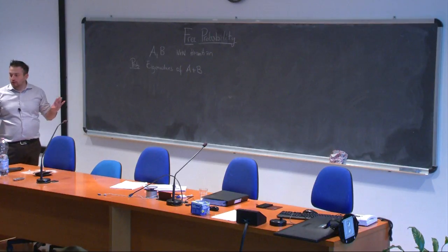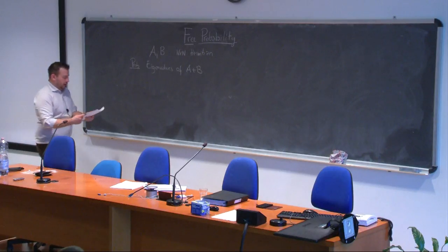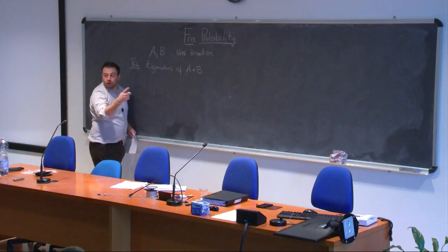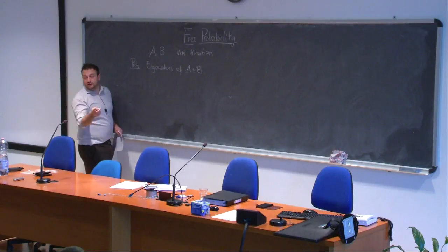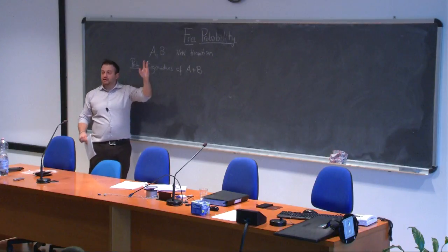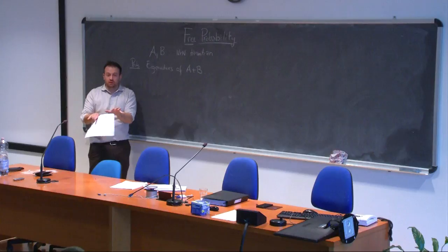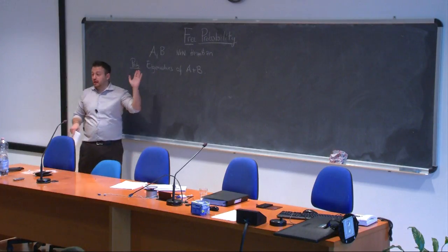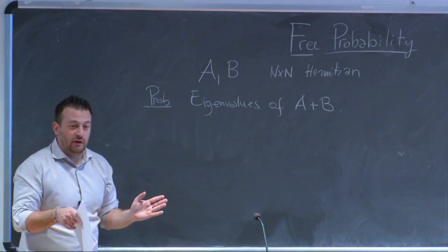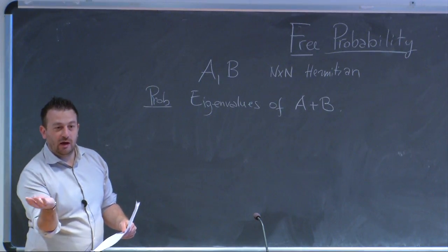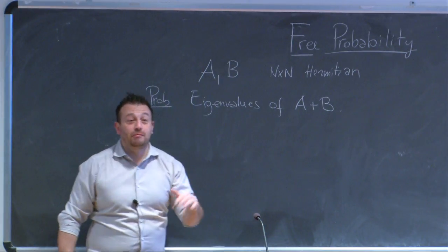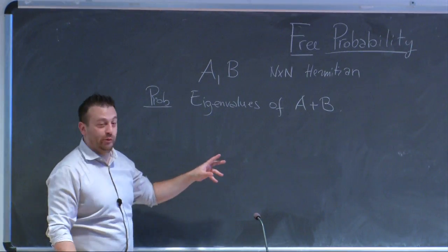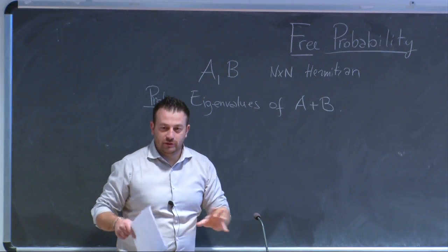This is a linear algebra problem, and already at this stage it is extremely complicated. To know the eigenvalues of A + B it is not sufficient to know the eigenvalues of A and the eigenvalues of B individually. The ingredients you need are the eigenvalues of A, the eigenvalues of B, and the relative position of the eigenspaces — because if A and B don't commute, they cannot be simultaneously diagonalized.